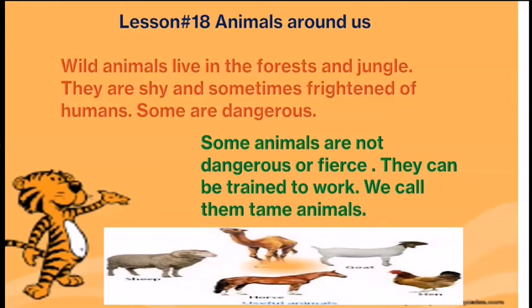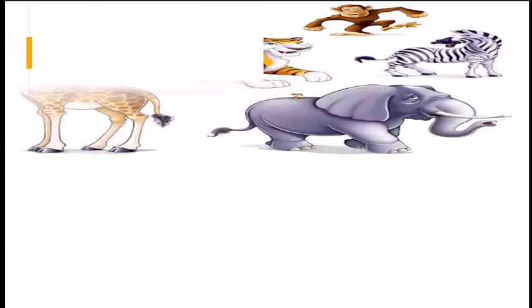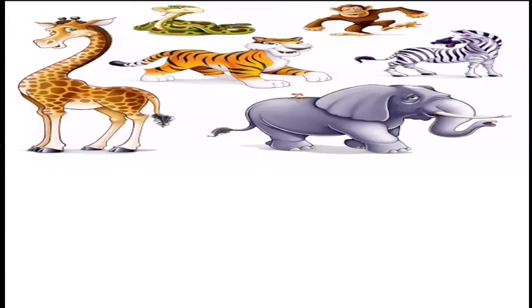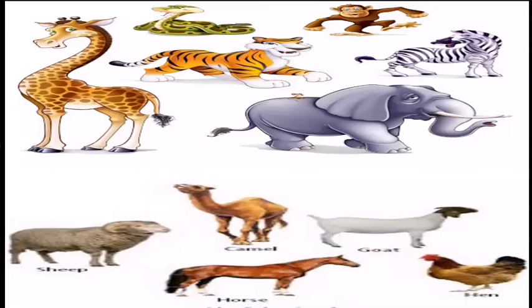Now you can see here in this slide different types of animal pictures. These are the wild animals: lion, tiger, monkey, giraffe, elephants. And this one shows tame animals: camel, horses, sheep, goat, and hen. Now here we learn about the third type of animals — farm animals.